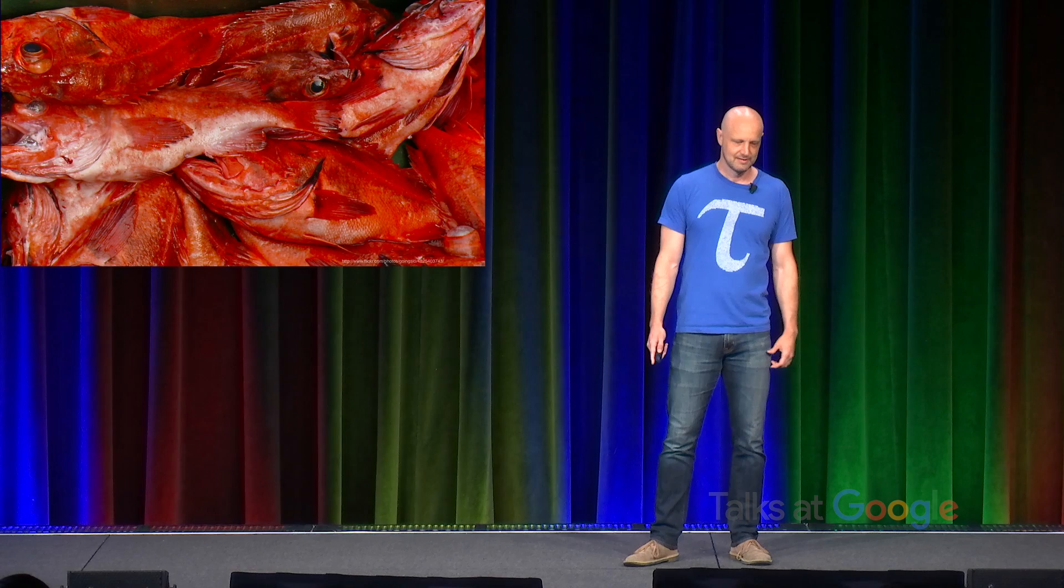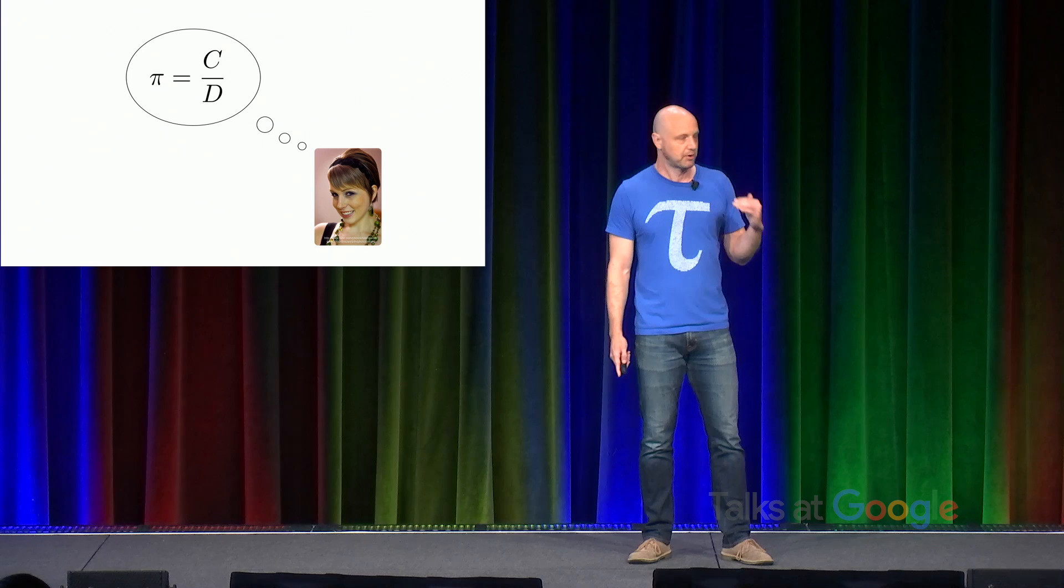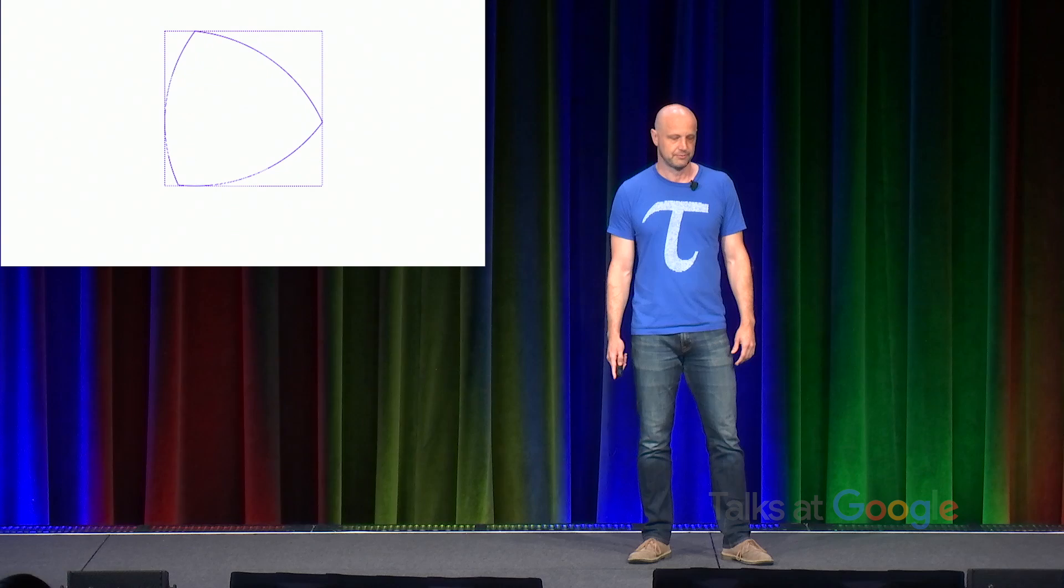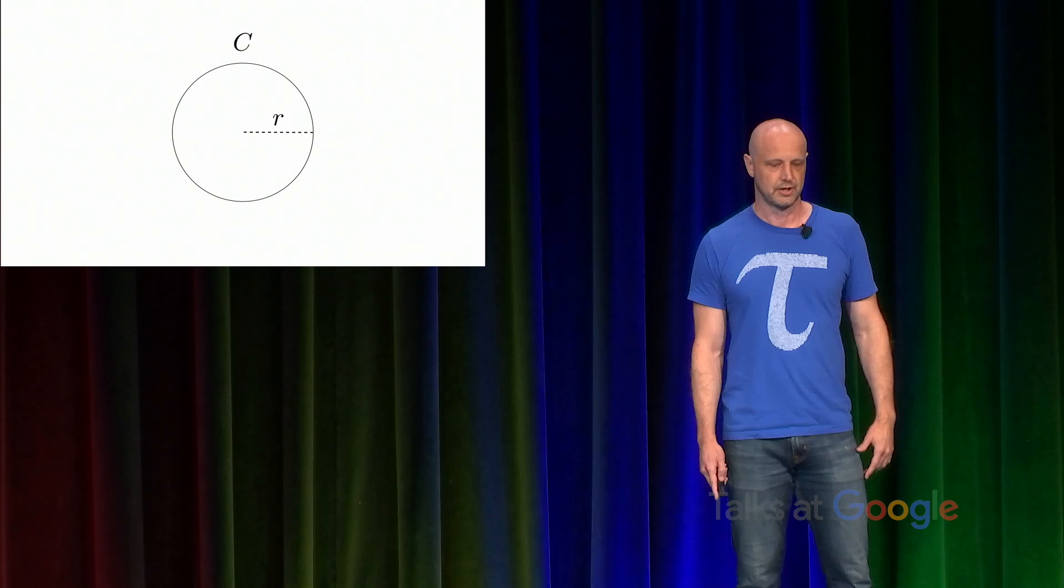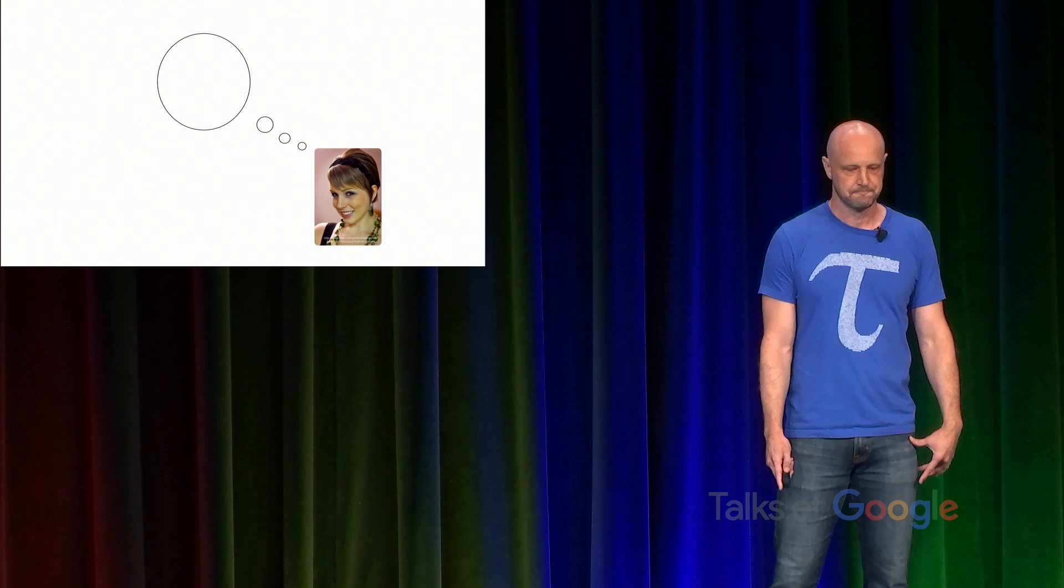Pi writes the circumference divided by the diameter, which gives primacy to the width of the circle. But in fact, there are infinitely many shapes that have constant diameter. There's only one shape that has constant radius. A circle is the set of all points a particular distance, the radius, away from the center. And this suggests the possibility that perhaps the more natural choice for the circle constant is C over R.